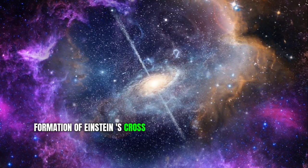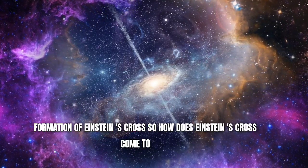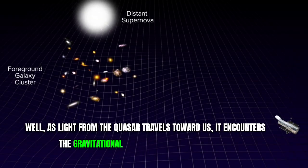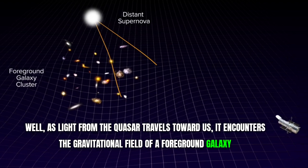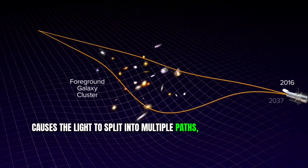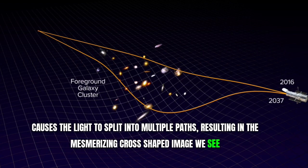Formation of Einstein's cross. So how does Einstein's cross come to life? As light from the quasar travels toward us, it encounters the gravitational field of a foreground galaxy. This cosmic tug-of-war causes the light to split into multiple paths, resulting in the mesmerizing cross-shaped image we see.